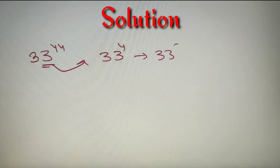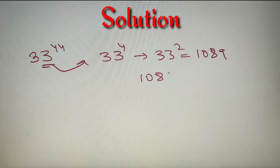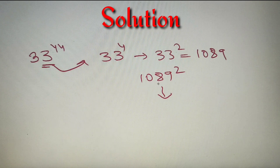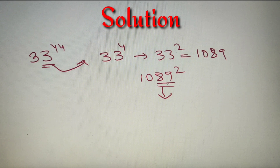We know that 33 squared is equal to 1089. Now, we have to find the square of 1089, which will give us 33 raised to the power 4. We don't need to find the full square of 1089 — we just need the last two digits, so we can find the square of 89, which gives the same result.